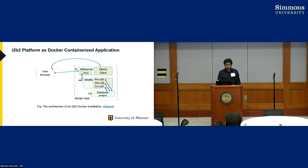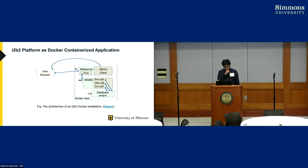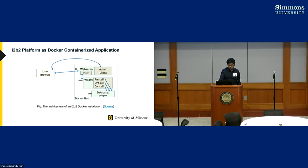From previous study, we know that the I2B2 platform can be run as Docker containerized applications. The major components of I2B2 — the web server, application server, and database server — can be implemented as three different containers. The containers communicate through a virtual Docker network hosted by a server, and end users can access I2B2 from a web browser over the internet.